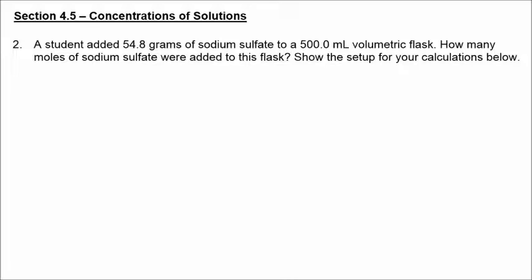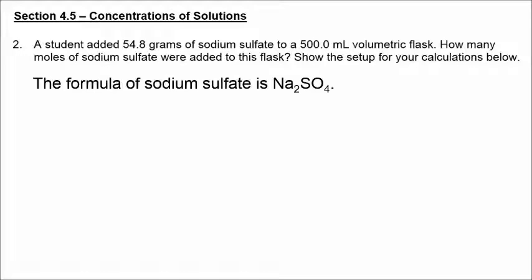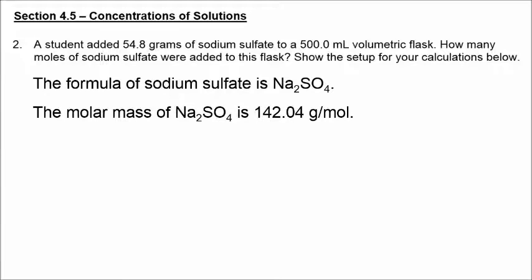Here's an example of a molarity problem. We know that we have 54.8 grams of sodium sulfate, and we are dissolving this in a total volume of 500 milliliters in a volumetric flask. We're going to calculate the moles of sodium sulfate, which is Na2SO4. If you do the calculation for molar mass, you get 142.04 grams per mole.